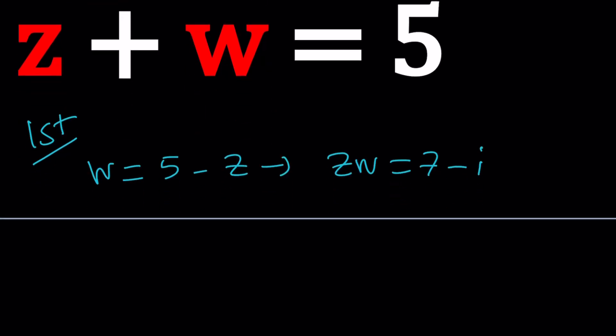Now we're going to go ahead and replace W with 5 minus Z. So this is going to become Z times 5 minus Z equals 7 minus I. And that'll turn into a quadratic equation.